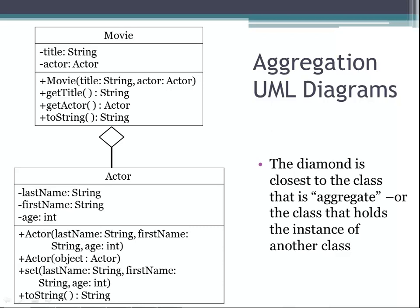Here we show how to express aggregation in UML diagrams. We have the UML diagrams for our movie and actor classes connected by a line and a diamond. The diamond is closest to the class that is the aggregate, or the class that holds the instance of the other class.